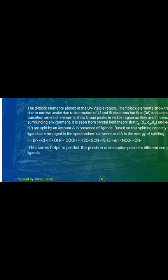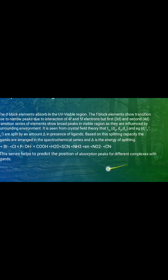The spectrochemical series is: I⁻ < Br⁻ < Cl⁻ < F⁻ < OH⁻ < H₂O < SCN⁻, and so on. This series helps to predict the position of the absorption peak for different compound-ligand combinations.